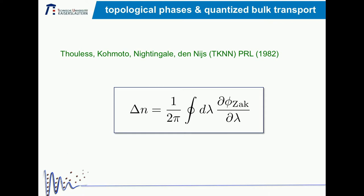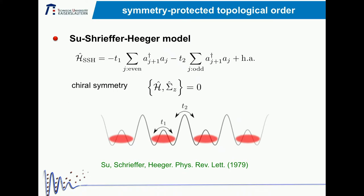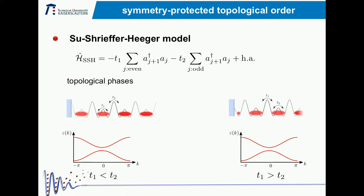Both of them are actually tightly connected to a measurable quantity, as pointed out by Thouless, Kohmoto, Nightingale, and den Nijs in the early 80s, who showed that in a topological insulator, if the Zak phase has a non-trivial winding, this is related to a transport of charge or particles in the bulk of the system. Let's have a look at a very simple model in one dimension: the Su-Schrieffer-Heeger model.